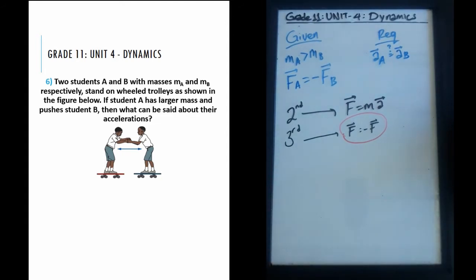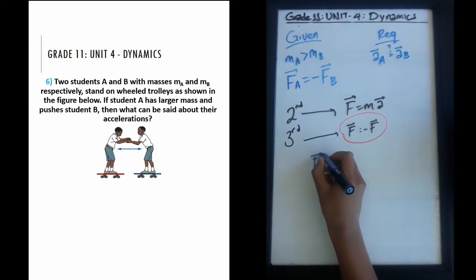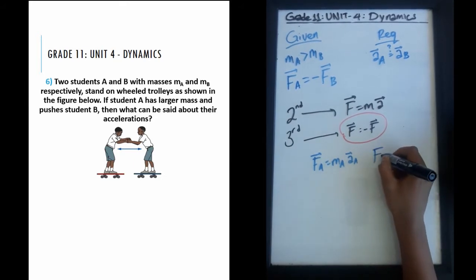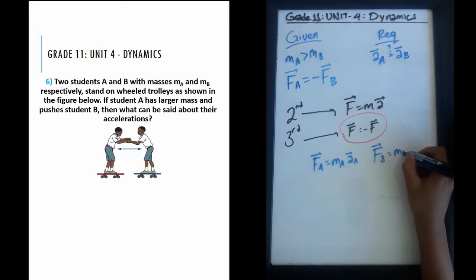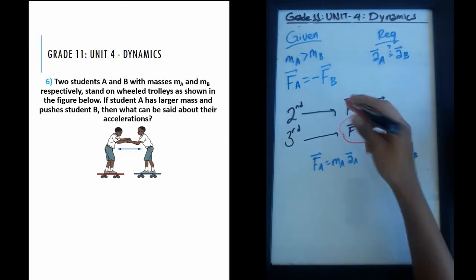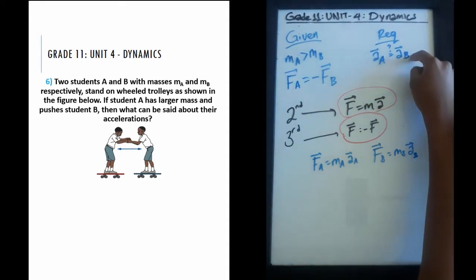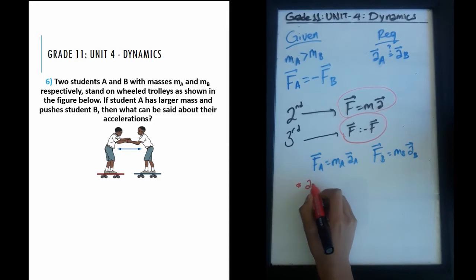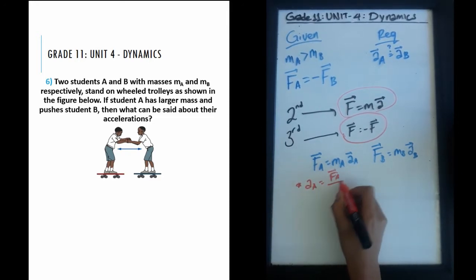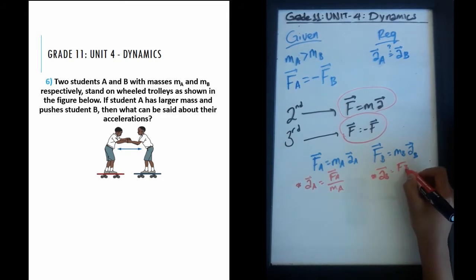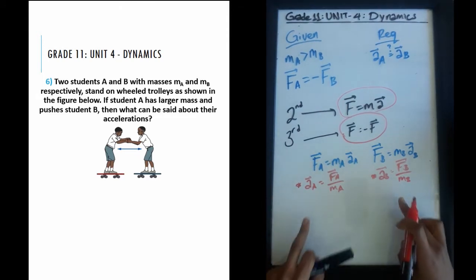Now let's apply the second law by looking at the accelerations of the two students separately. For student A, the force applied makes mass A accelerate; similarly for student B. Since we're asked about acceleration, we rearrange F = ma: acceleration A equals force A divided by mass A, and acceleration B equals force B divided by mass B.